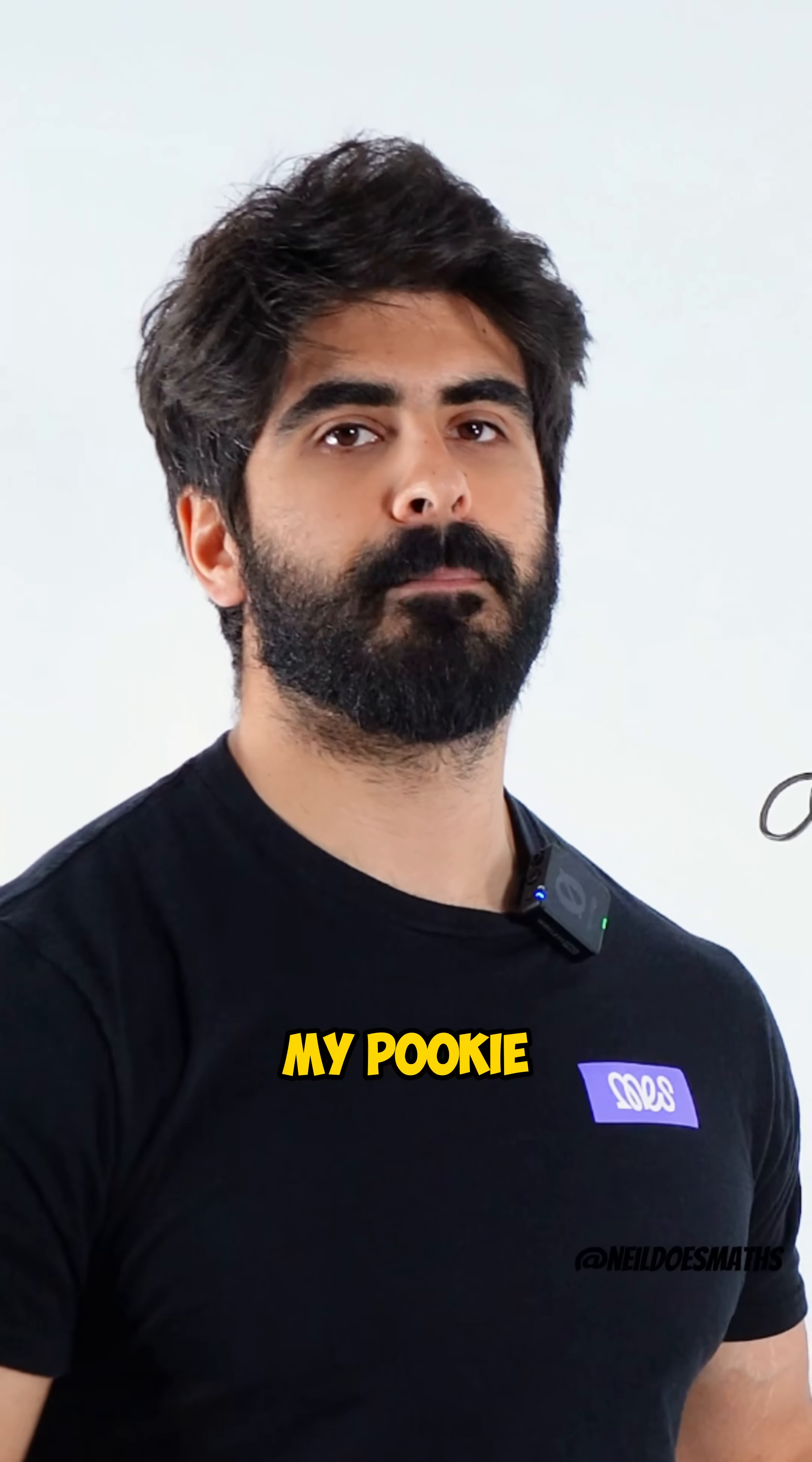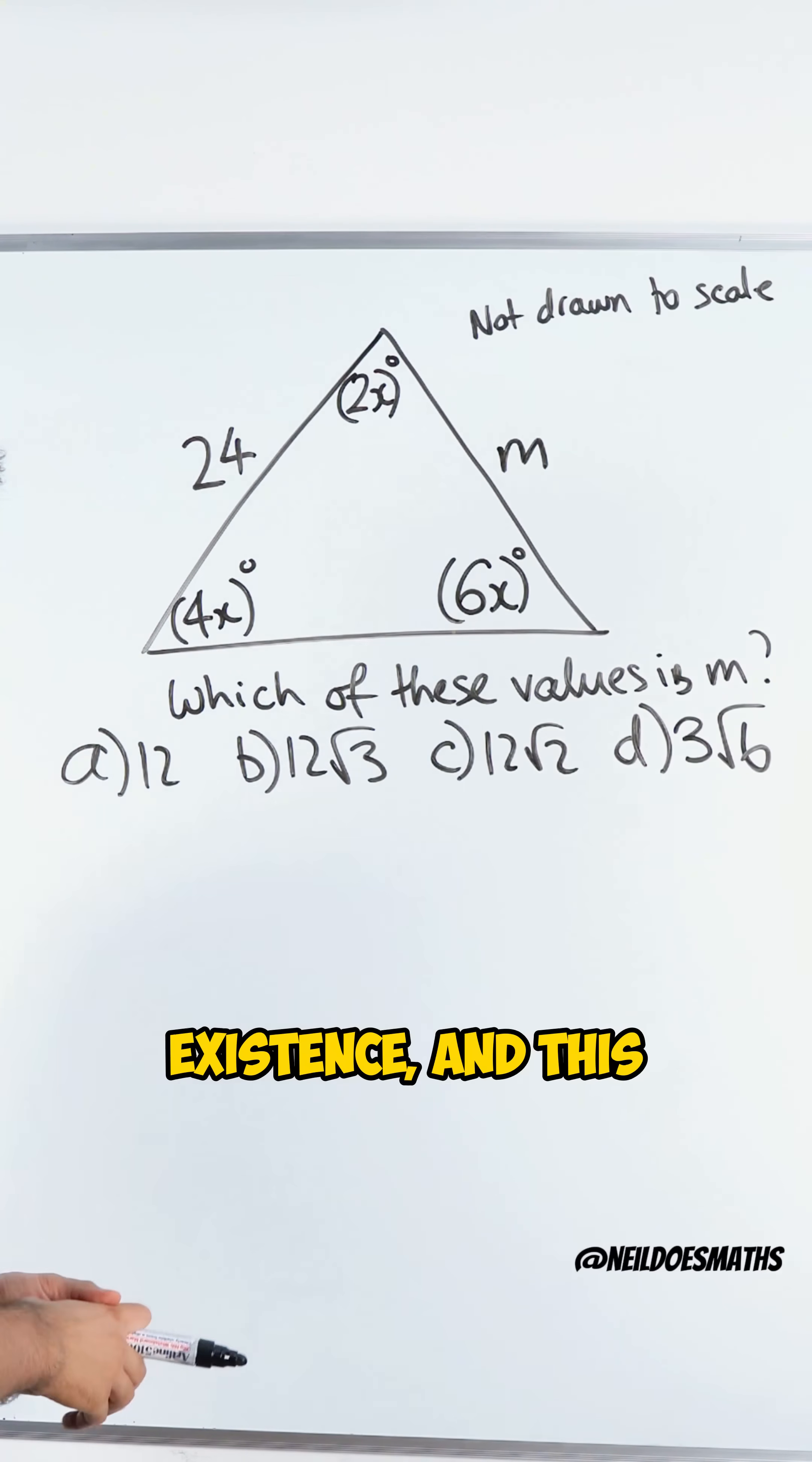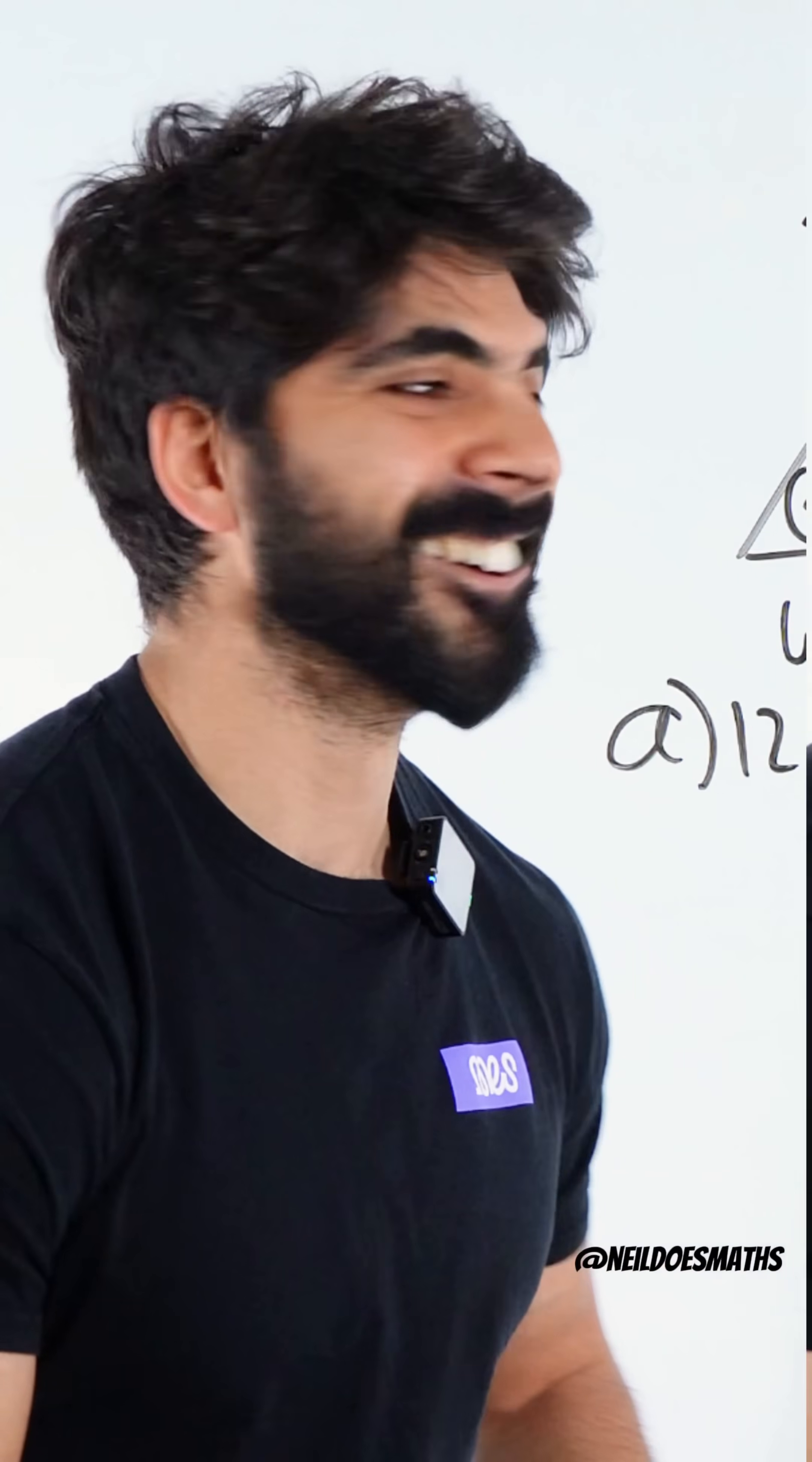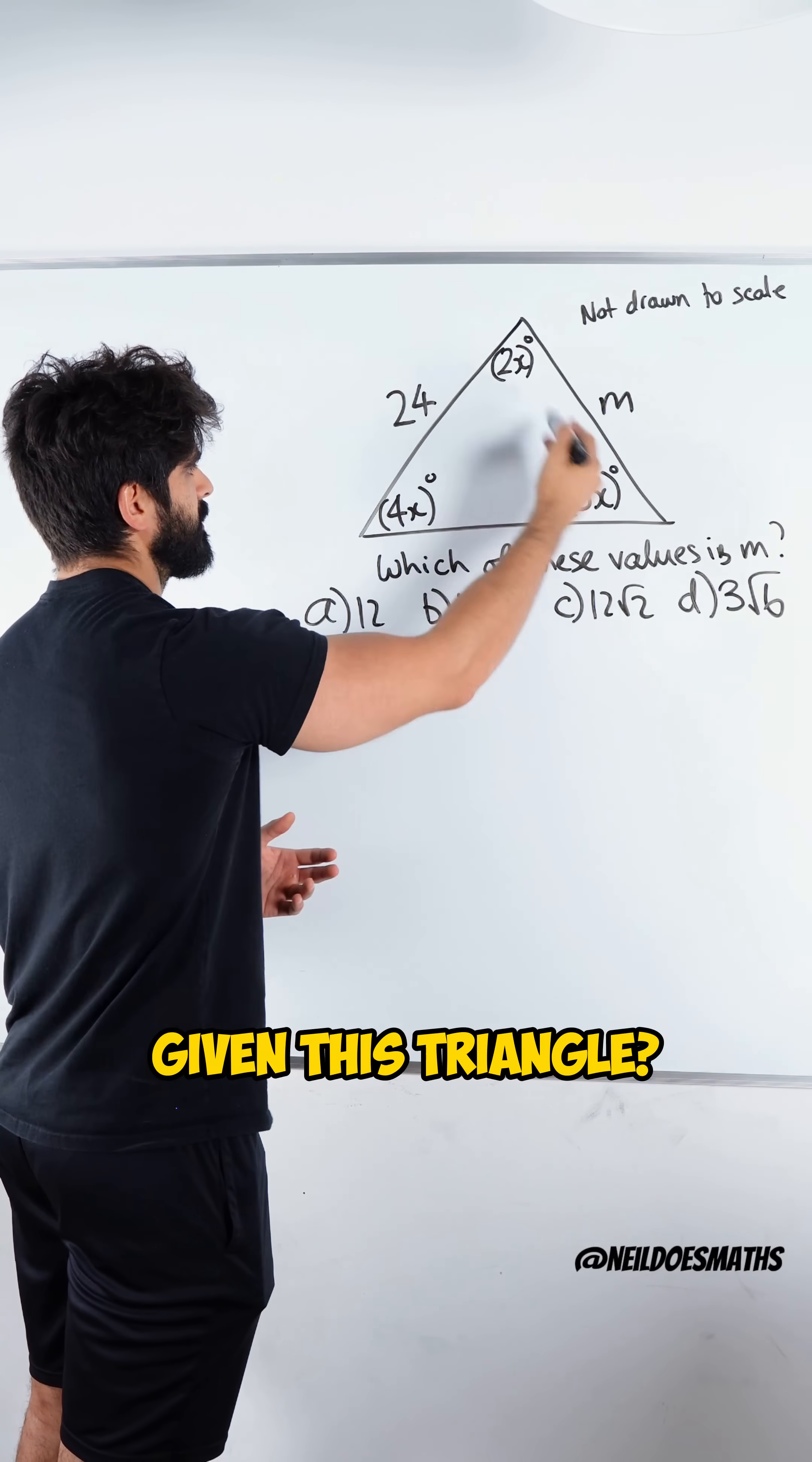I asked ChatGPT, my Pookie, for the hardest SAT question ever in existence and this is what it told me. Let's solve it. Is it really that hard? So the question is saying which of these values is this length m given this triangle?